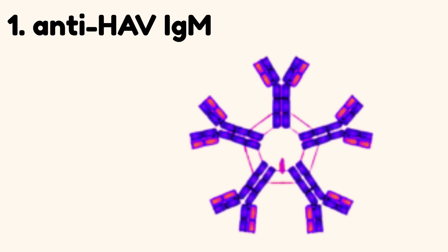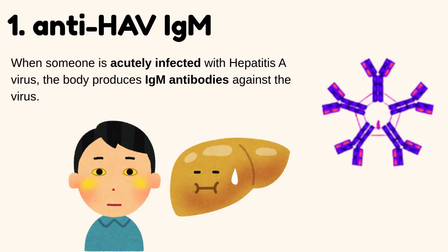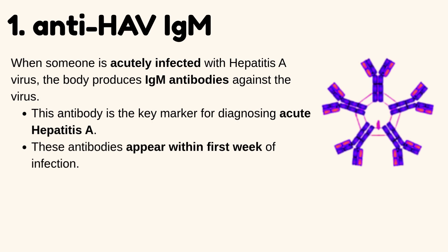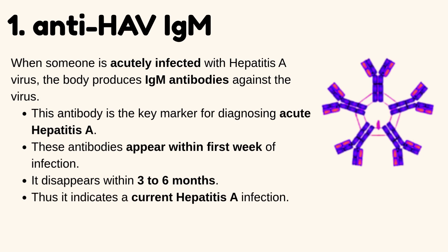Number 1: Anti-HAV IgM. When someone is acutely infected with Hepatitis A virus, the body produces IgM antibodies against the virus. This antibody is the key marker for diagnosing acute Hepatitis A. These antibodies appear within the first week of infection and disappear within 3 to 6 months, indicating a current Hepatitis A infection.